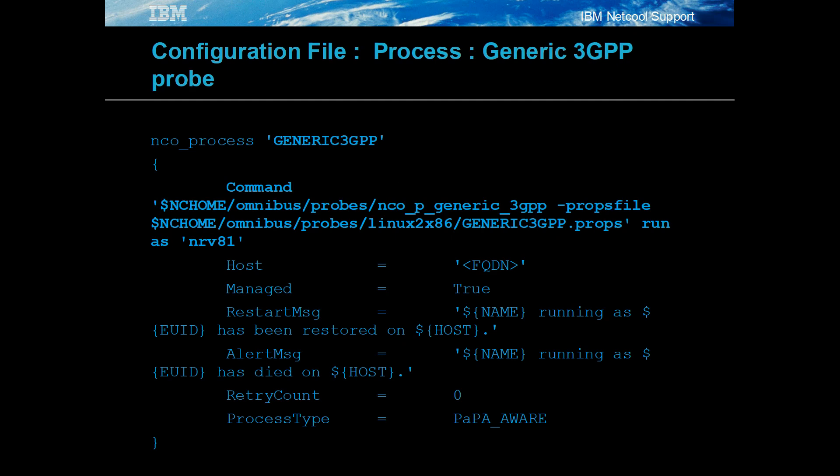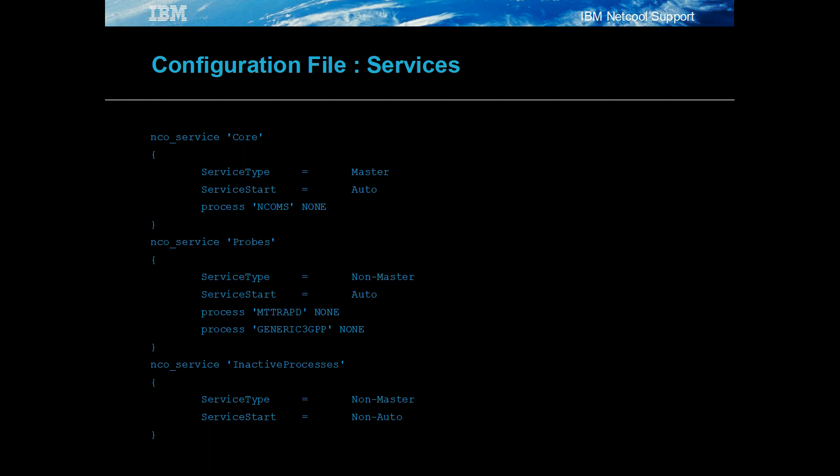The generic 3GPP probe can be run in the same manner as other probes. The command run is always the probe script for Unix installations. Sometimes it is necessary to run binaries directly, but this type of configuration requires additional environment settings that are performed by the scripts.